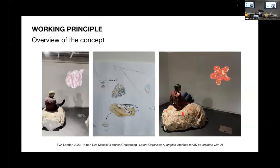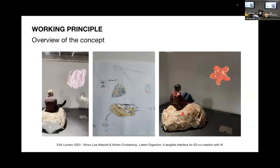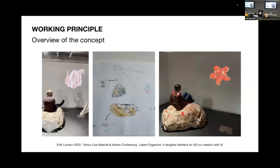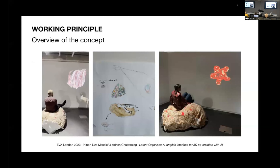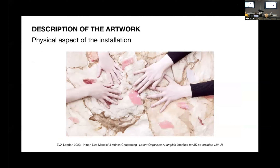At its core, our system is a blend of physical interaction and machine learning. Latent Organism is a tangible interface that invites users to manipulate a virtual 3D form directly derived from an AI's imagination. Now, let's delve into the specific parts of the artwork.